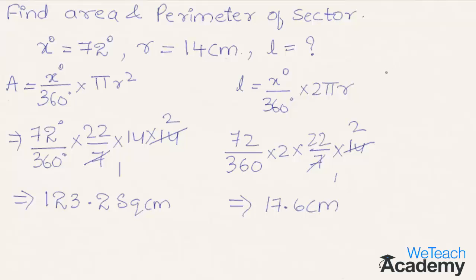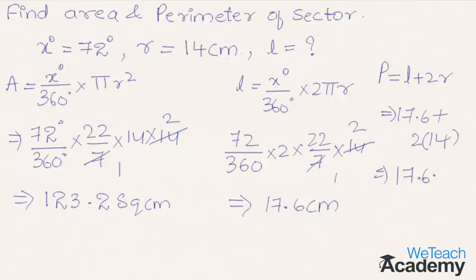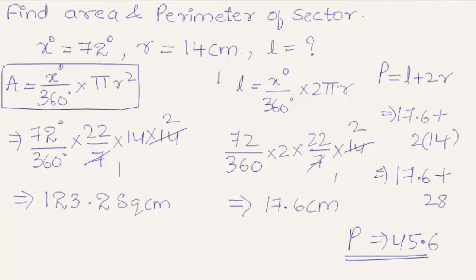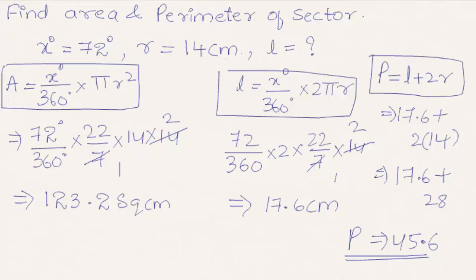Coming to the perimeter: perimeter equals length plus 2 times radius. Substituting: 17.6 plus 2 times 14, which gives 17.6 plus 28, equal to 45.6 centimeters as the perimeter. To conclude: area of sector is x degrees by 360 into pi R squared; length of arc is x degrees by 360 into 2 pi R; and perimeter is L plus 2R. This was a basic introduction to sector.